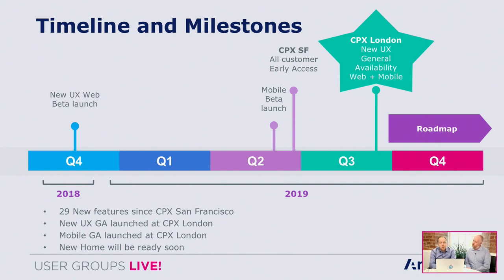In terms of timeline, we delivered a beta version of the new user experience at the back end of last year, then ran a six-month beta period with around 60 customers giving us feedback. We opened early access to all customers at CPX in San Francisco in June, and then announced general availability of the new user experience in October at our London CPX. Between June and October we released an additional 29 new features, which shows the velocity we can achieve with the new user experience.